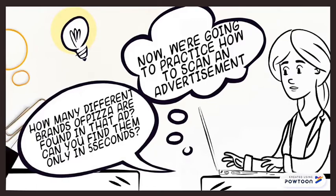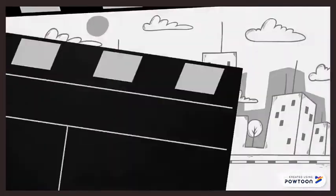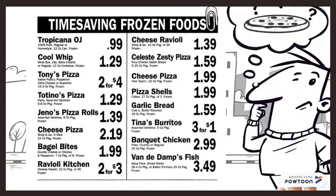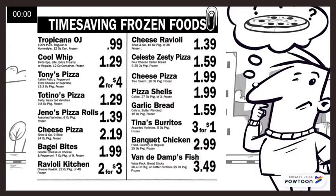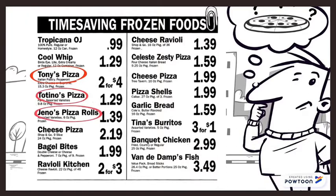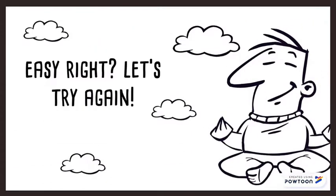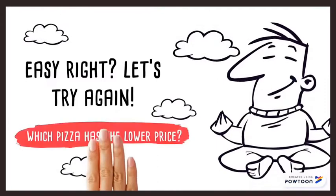Can you find them in only 5 seconds? The keyword here is 'pizza.' Let's check how many pizzas you can find. That's 1, 2, 3, 4, 5, and 6 — so the answer is 6. Easy, isn't it?